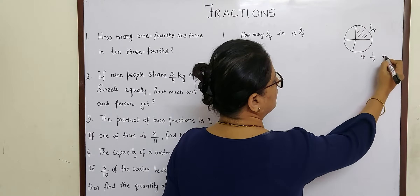The fourth problem: the capacity of a water tank is 2540 litres. Three-tenths of the water leaked through a hole. Find the quantity of water remaining in the tank. The tank has 2540 litres of water. Three-tenths of the water has leaked out — that means we first calculate what three-tenths of 2540 litres is, and then subtract that from the total to find the remaining water. So we use subtraction.